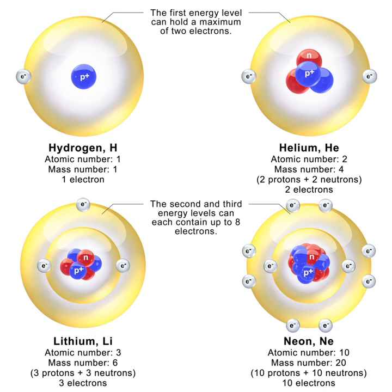Atomic nuclei are formed by a number of protons, Z the atomic number, and a number of neutrons, the neutron number, bound together by the nuclear force. The atomic number defines the chemical properties of the atom, and the neutron number determines the isotope or nuclide. The terms isotope and nuclide are often used synonymously, but they refer to chemical and nuclear properties respectively. Strictly speaking, isotopes are two or more nuclides with the same number of protons; nuclides with the same number of neutrons are called isotones.